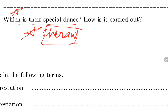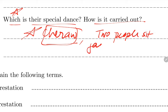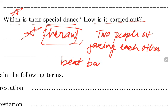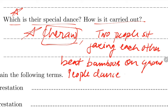When the rice harvest arrives home after many days of carrying on their backs, people celebrate with great joy. They perform the Cherao dance together. How is Cherao performed? Two people sit facing each other, each holding bamboo sticks. They beat the bamboos on the ground to the beat of a drum, and other people dance between the bamboos.